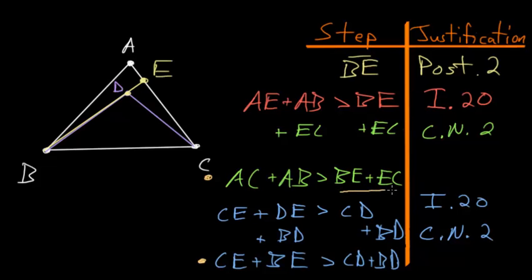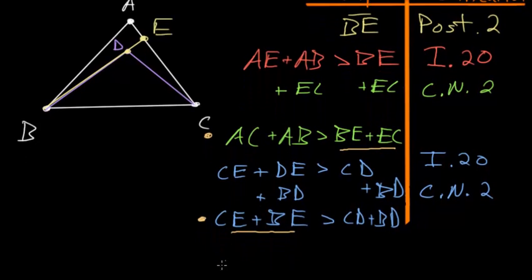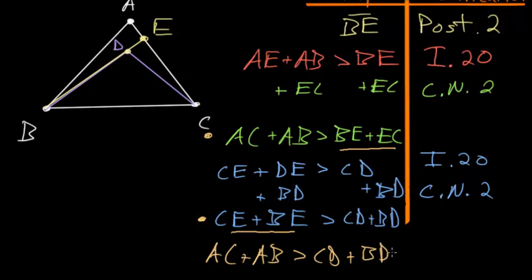So we have that CE plus BE is bigger than CD plus BD. Now notice that these two inequalities share one side in common — namely BE plus EC appears in both. Since AC and AB added together are bigger than BE plus EC, and BE plus CE is bigger than CD plus BD, we can conclude that AC plus AB is bigger than CD plus BD. This is exactly what we sought to prove: AB and AC are bigger than BD and CD.